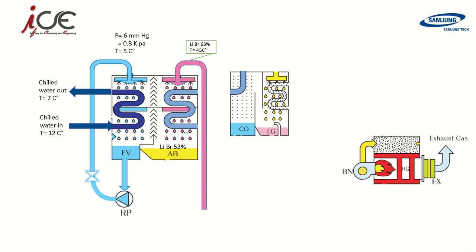With the increase in temperature of lithium bromide, its ability to absorb additional water vapor decreases. So it must be cooled in order to increase its absorption capacity again and withdraw the largest amount of vapor. This is the importance of cooling water coming from the cooling tower — to cool the lithium bromide solution in the absorber first and then in the condenser. The cooling water enters the chiller at a standard temperature of 32°C and exits the cooling tower at 37°C.